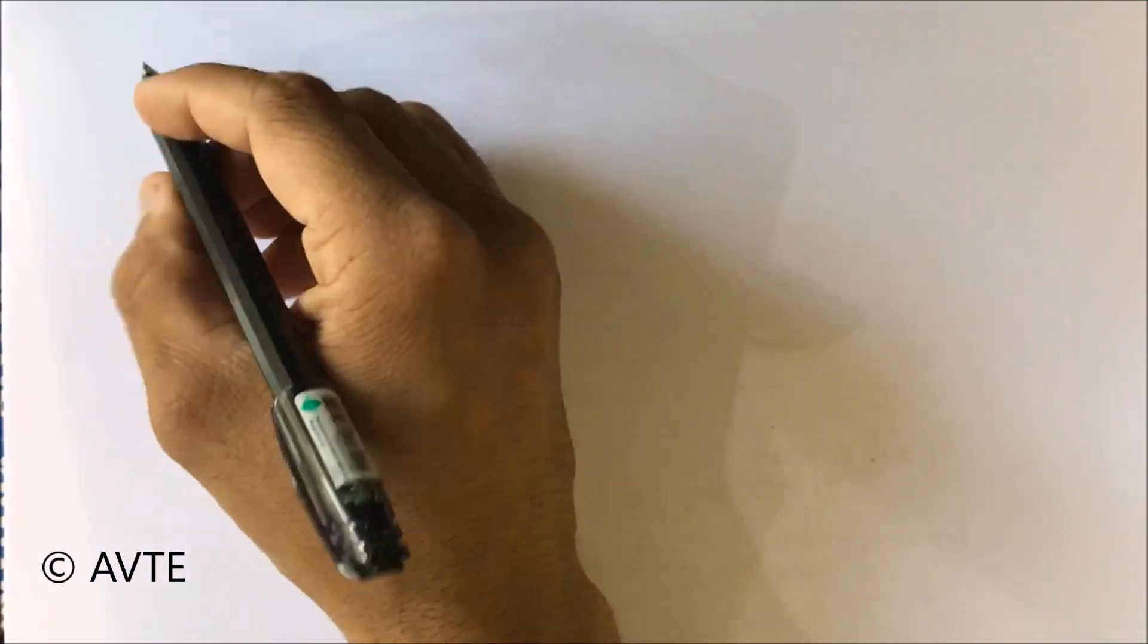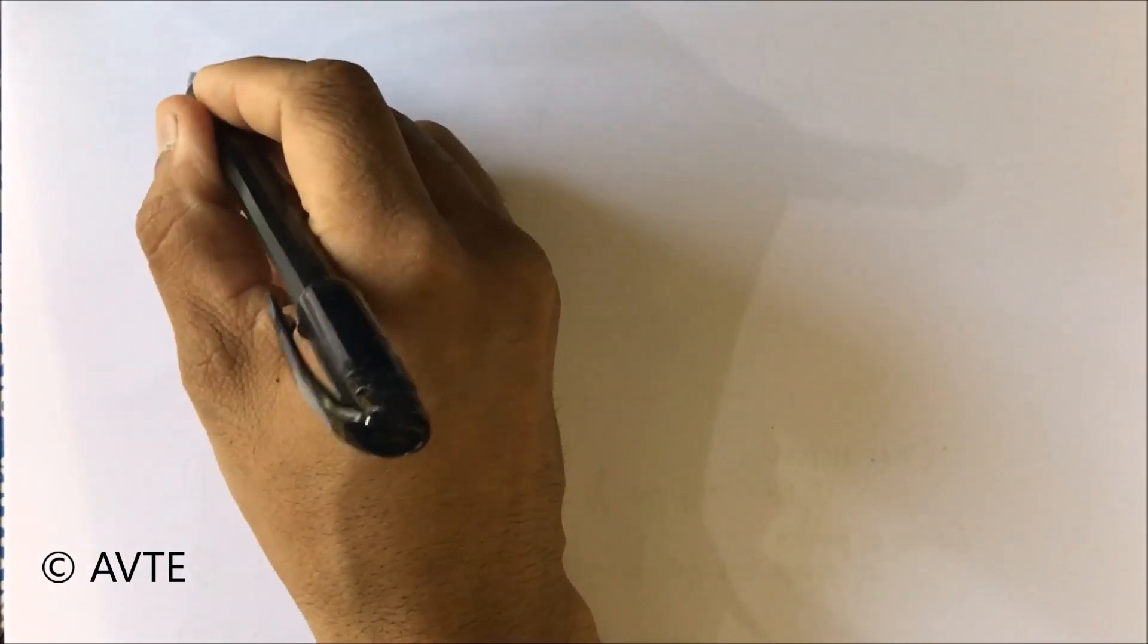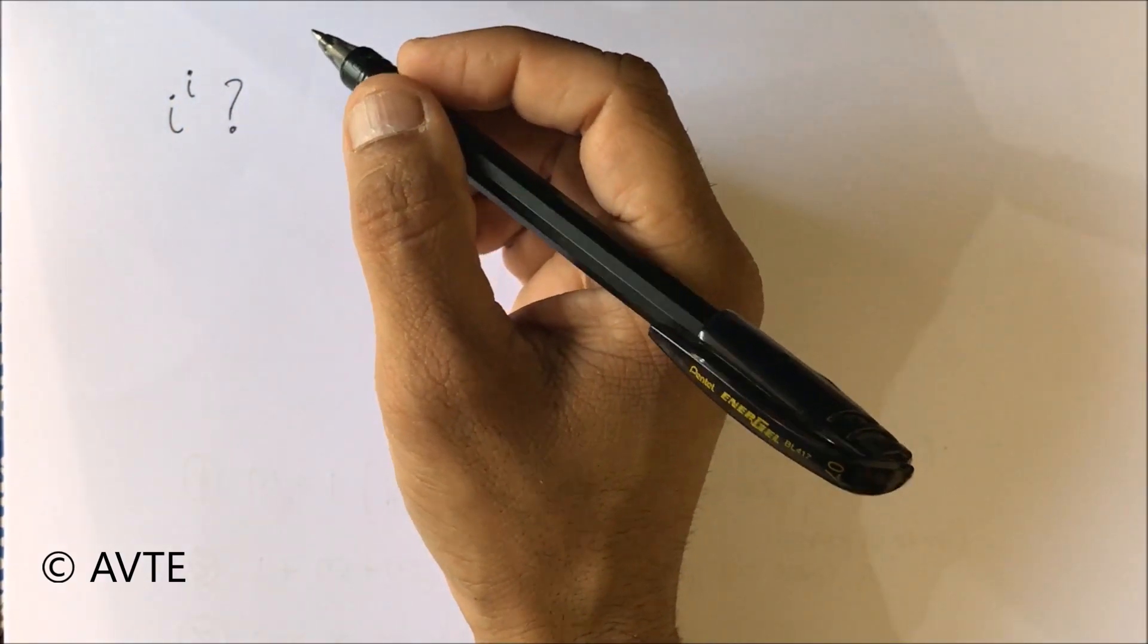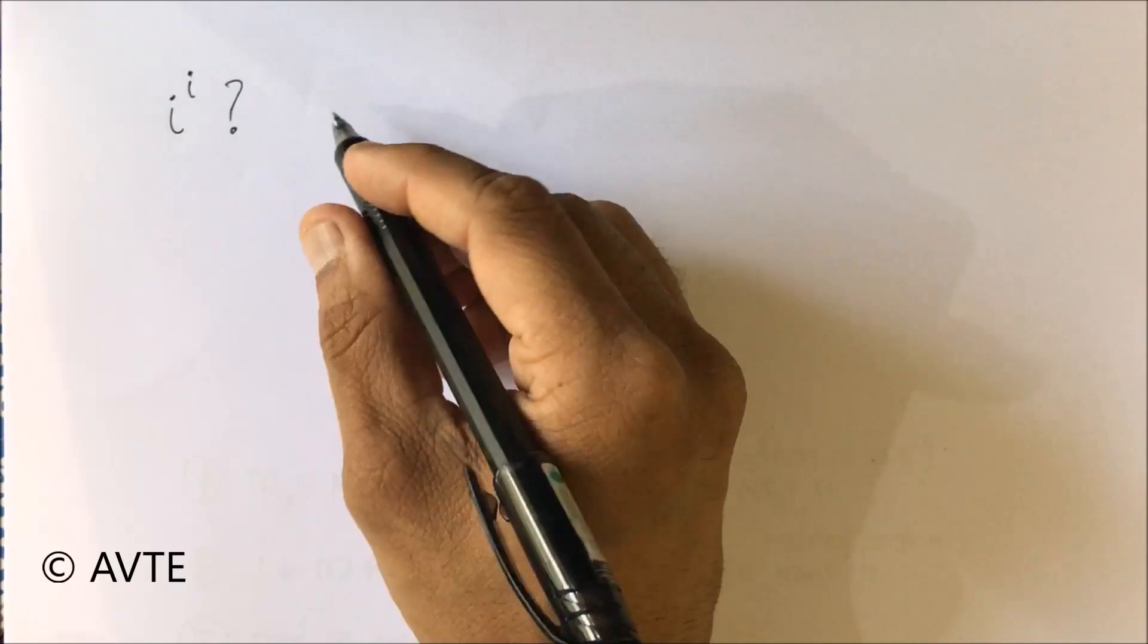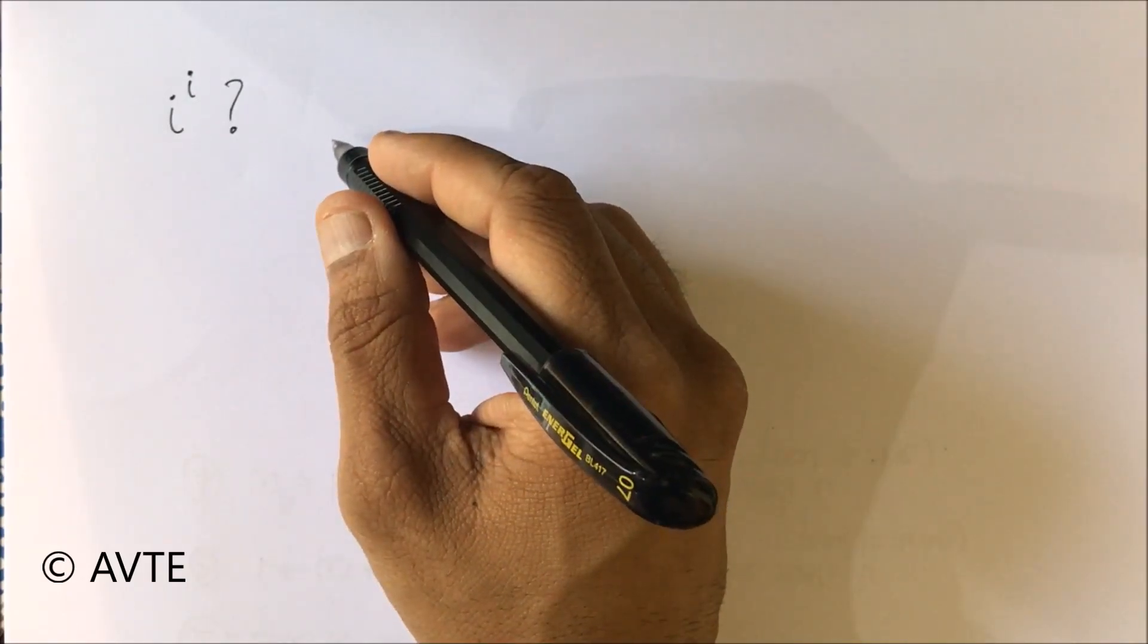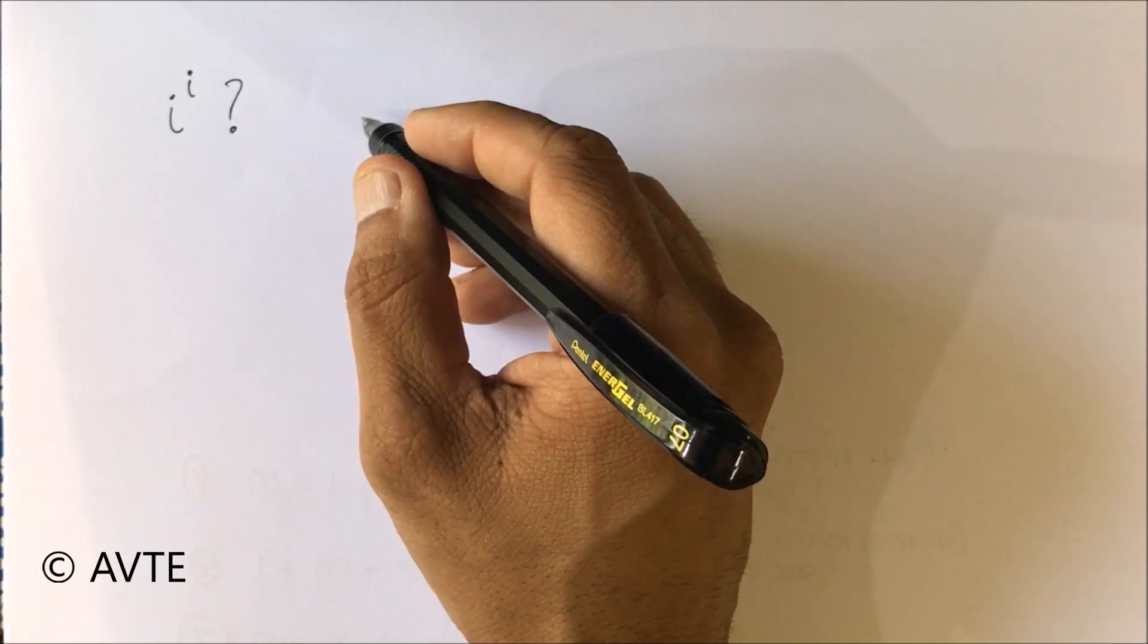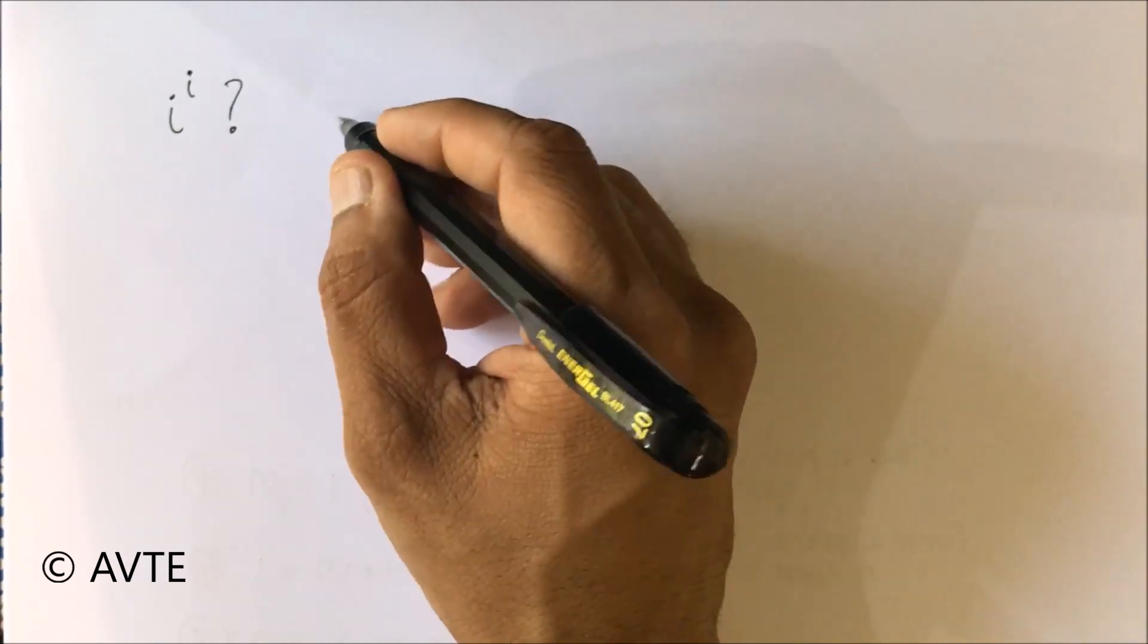Now watch carefully. What is iota to the power iota? This is a big question mark for many. But before we understand iota to the power iota, we must understand Euler's relation.